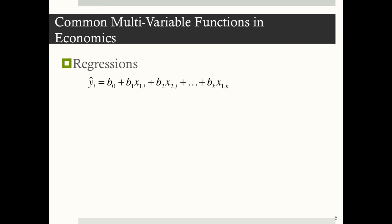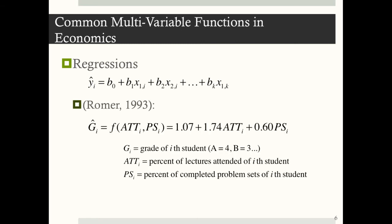And finally, you'll see multivariable functions in econometrics and in the second part of this course. Generally, a regression tells us that y-hat sub i equals a big equation where the b's are estimates of the coefficients and the x's are different variables. From Romer 1993, the grade of the i-th student depends on the percent of lectures attended and the percent of completed problem sets of the i-th student.